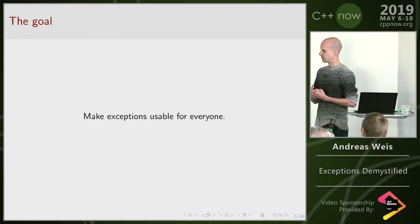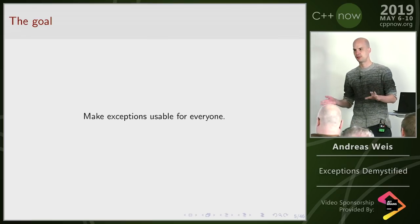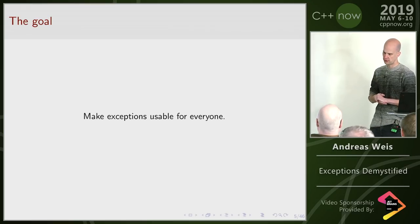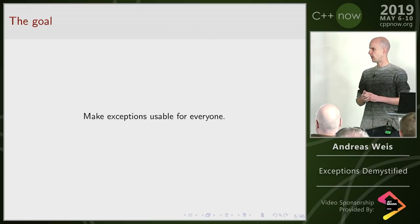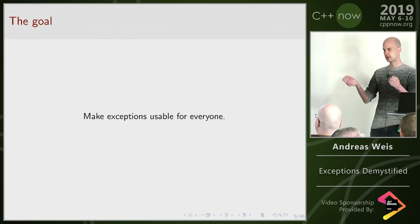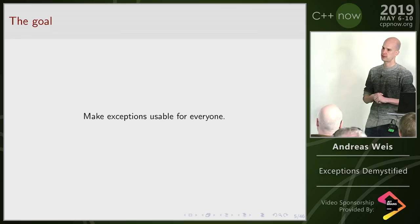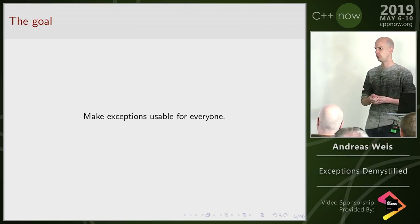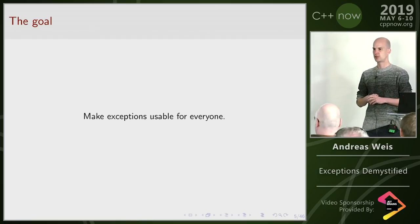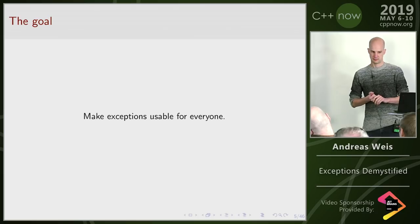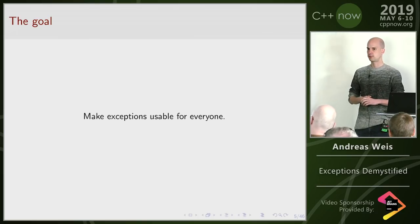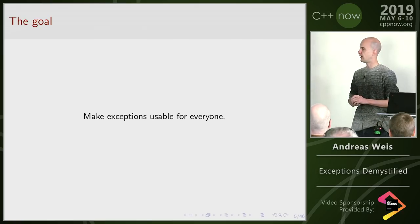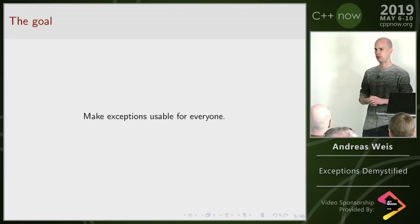The goal I would like to reach is to make exceptions usable for everyone. There was a well-known survey on ISOCPP.org where they asked C++ developers if they were able to use exceptions in their projects, and around half of them replied that they had to switch them off. So a lot of people these days are using a dialect of C++ where they cannot use exceptions. I want to discuss what would be required to change that.